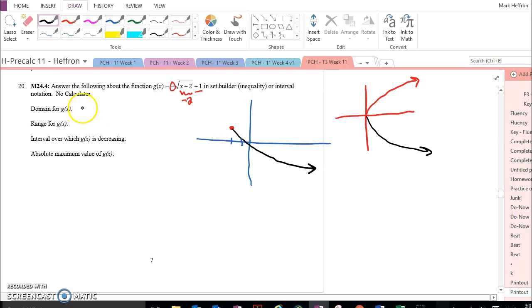And so our domain is everything greater than or equal to negative 2. You could also have written it like this, though I asked for an inequality notation.